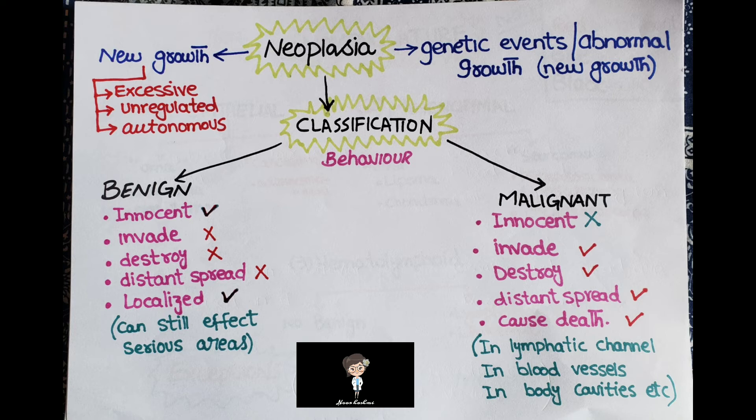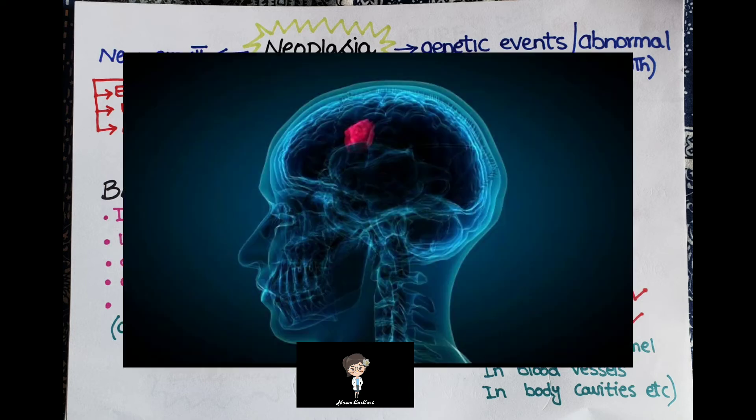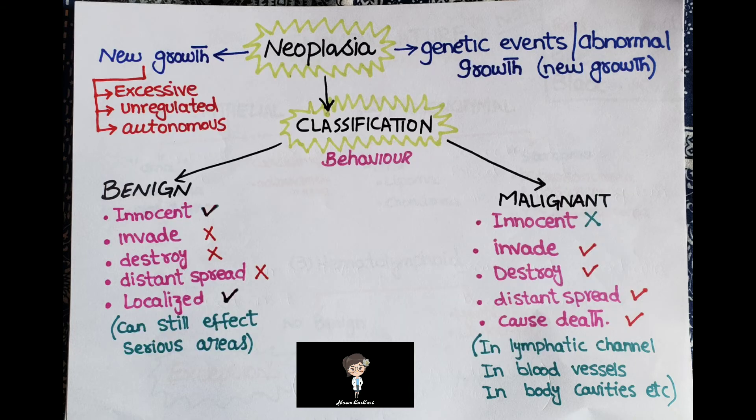However, this does not mean benign tumors always have minimal clinical effects. Some can cause very serious clinical manifestations — for example, tumors in the brain, where the skull is a very restrictive and hard cavity. Tumors there can compress vital structures and eventually cause death.